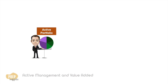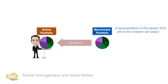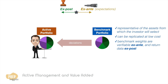Active management is always relative to a benchmark. An appropriate benchmark should be representative of the assets from which the investor will select, can be replicated at low cost, and the benchmark weights are verifiable ex ante, with return data ex post. For this topic, it's important to distinguish between ex ante — that is, forward-looking based on expectation — and ex post, which is backward-looking based on events that have already happened.